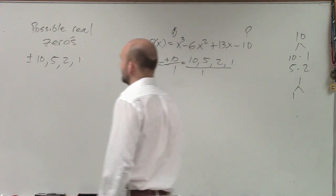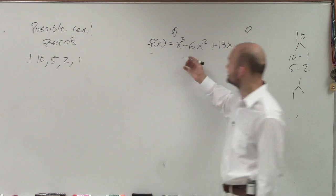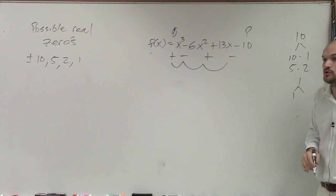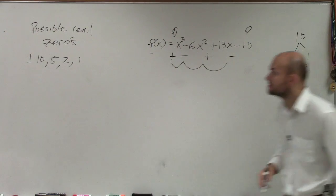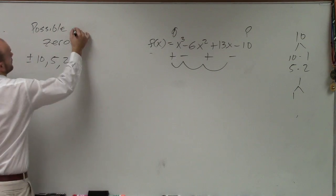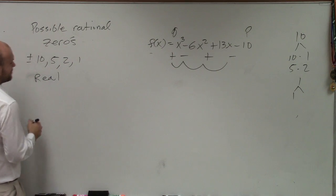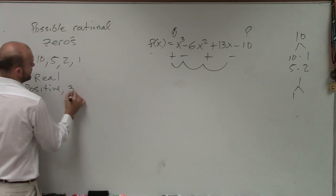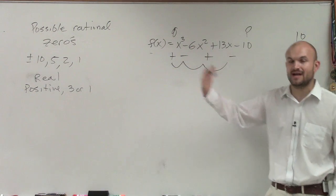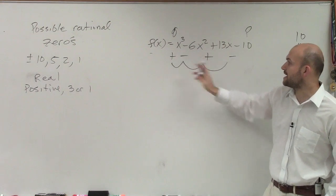Now let's apply Descartes' rule of signs. If we bring down the signs of our polynomial, we have positive, negative, positive, negative — that's 3 alternating sign changes. So by Descartes' rule, we have a possibility of 3 or 1 positive real zeros, because you subtract an even number: 3 alternating signs, subtract 2, gives 1.